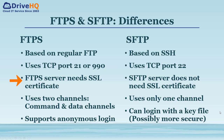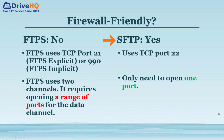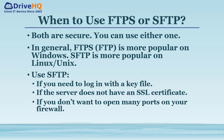An FTPS server needs an SSL certificate, but an SFTP server uses a key pair. FTPS uses two channels and supports anonymous login, while SFTP uses only one channel and does not support anonymous login, but it does support login with a key file. SFTP is firewall friendly — you only need to open one TCP port (22) on the server. FTPS usually requires opening a range of ports for the data channel. Both FTPS and SFTP are secure; you can use either one.